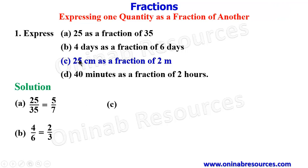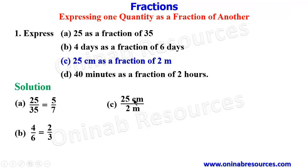We then go for C. For C, 25 centimeters as a fraction of 2 meters. So 2 meters will be the denominator, while the 25 centimeters will be the numerator. Here we cannot simplify further except we convert them to the same units. The numerator is in centimeters, while the denominator is in meters. Therefore, we convert to the smaller unit — meters is the bigger unit, centimeters is the smaller unit — so we convert the meters to centimeters. 100 centimeters make 1 meter. Since we have 2 meters here, it is going to be 200 centimeters.